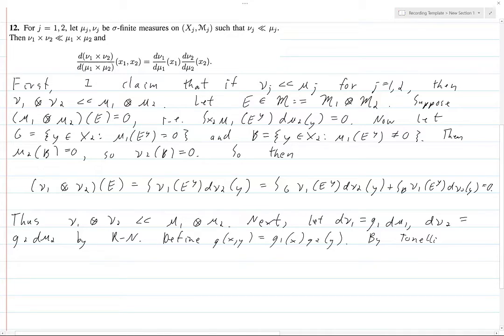Then by Tonelli we have: let's look at ν_1 tensor ν_2 of E again. This is equal to integral of ν_1(E^y) dν_2(y), and here we're using Tonelli to write this out as E^y(x) dν_1(x) dν_2(y).